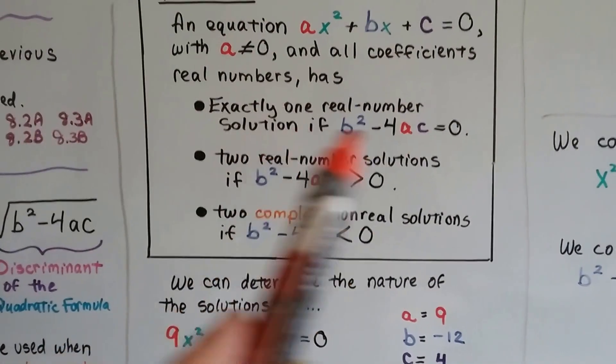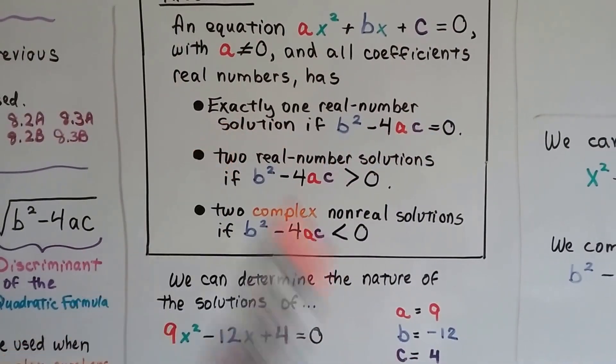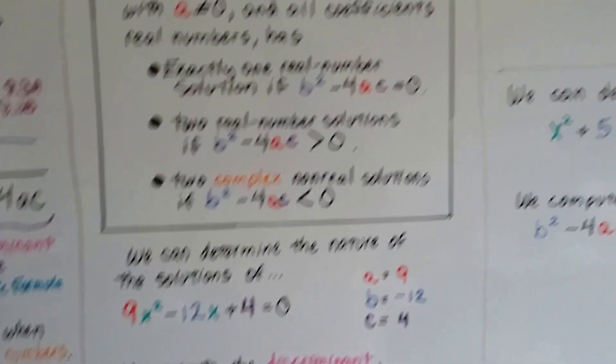Our discriminant equals zero. So there's exactly one real number solution. So if you look at the theorem, it equals zero. So there's one real number solution. See that? Alright, let's try another one.